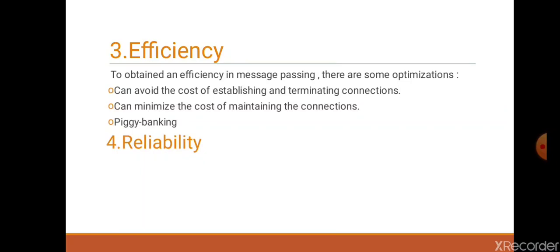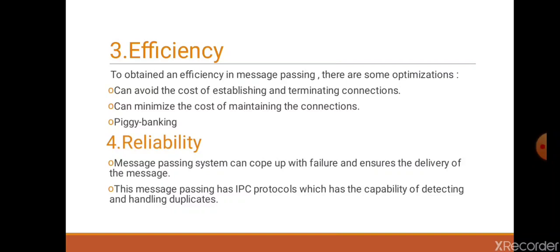The next feature is reliability. Distributed operating systems are prone to different catastrophic events such as node crashes, which may interrupt communication and result in loss of messages. If an IPC protocol can cope up with failure and ensure the delivery of messages, then lost messages can be handled. If any message passing system has reliability, sometimes messages are duplicated at the time of failures, so the IPC protocol has the capability to detect and handle duplicate messages.